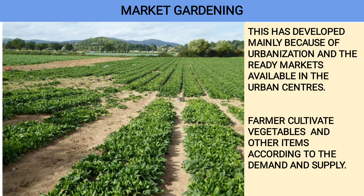Now let us see market gardening. This has developed mainly because of urbanization and the ready markets available in urban centers. Farmers cultivate vegetables and other items according to demand and supply — if there is demand for a particular type of vegetable, the farmer will cultivate only that vegetable. Characteristics of market gardening include use of irrigation, organic and chemical fertilizers, low investment, use of manpower, demand of markets, and use of science and technology.